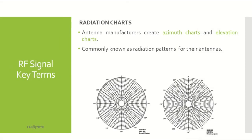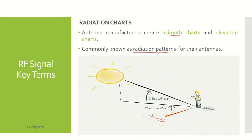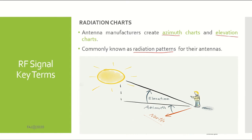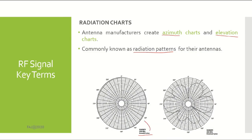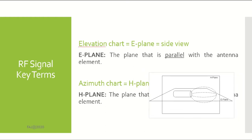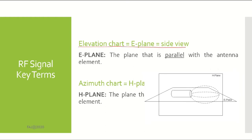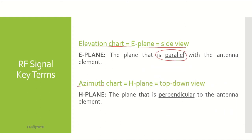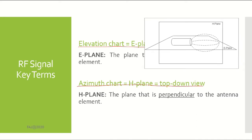Radiation chart, also known as radiation patterns. Antenna manufacturers create azimuth and elevation charts to assist potential buyers with their purchasing decision. This is an example of an azimuth chart and this is an example of an elevation chart for an omnidirectional antenna. The elevation chart equals the E-plane inside view, where the E-plane is the plane that is parallel with the antenna element. The azimuth chart equals the H-plane in top-down view, where the H-plane is the plane that is perpendicular to the antenna element.